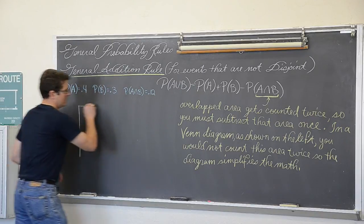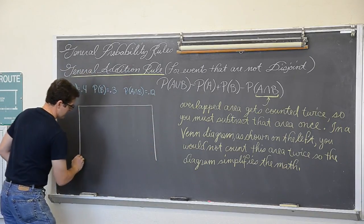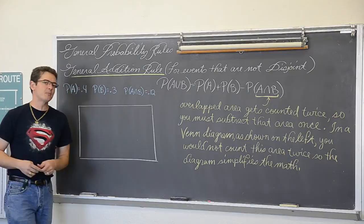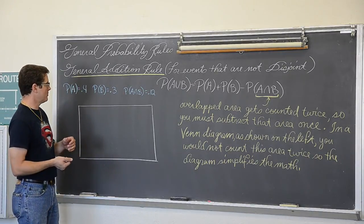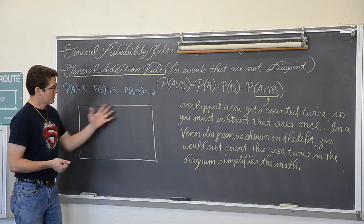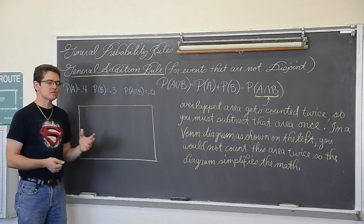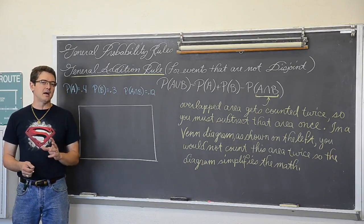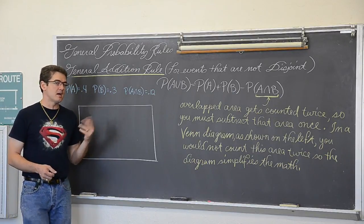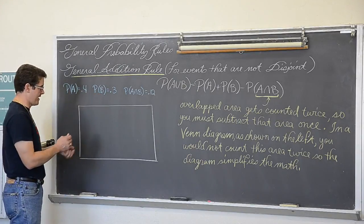To set up a Venn diagram, you draw a rectangle, and that rectangle represents the entire sample space. So the area or the probability inside this square is going to be 1. Now it is not a density curve, but it is kind of like that, where this is the entire sample space. Now inside the sample space, we have a couple of events.